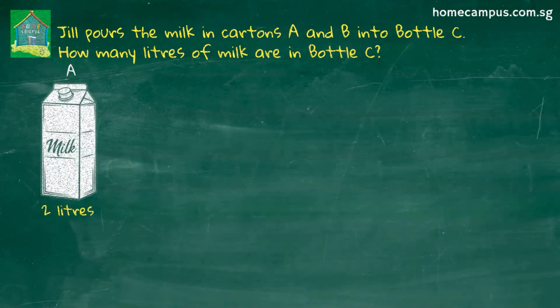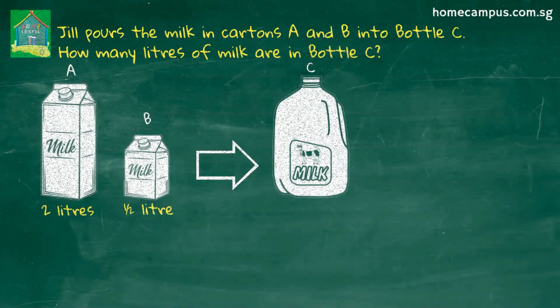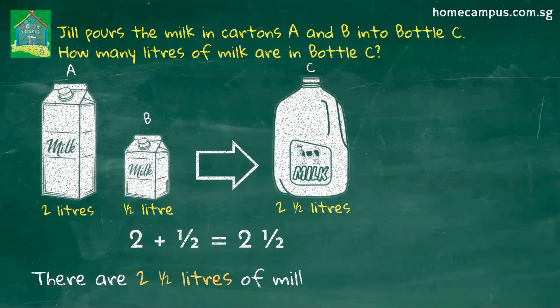So, Jill pours two liters of milk from carton A and half a liter of milk from carton B into bottle C. Therefore, bottle C will have two plus half or two and a half liters of milk.